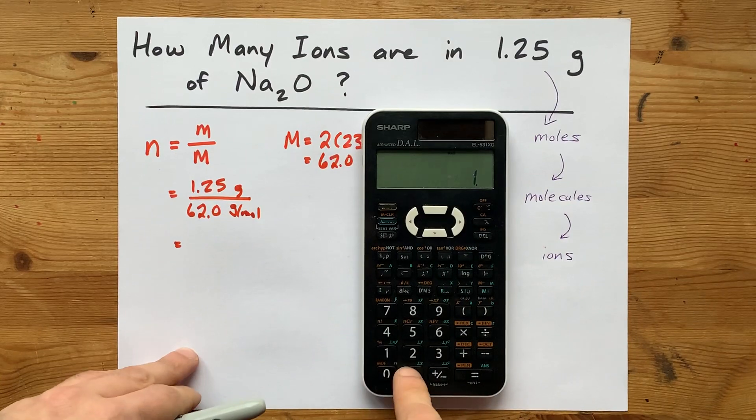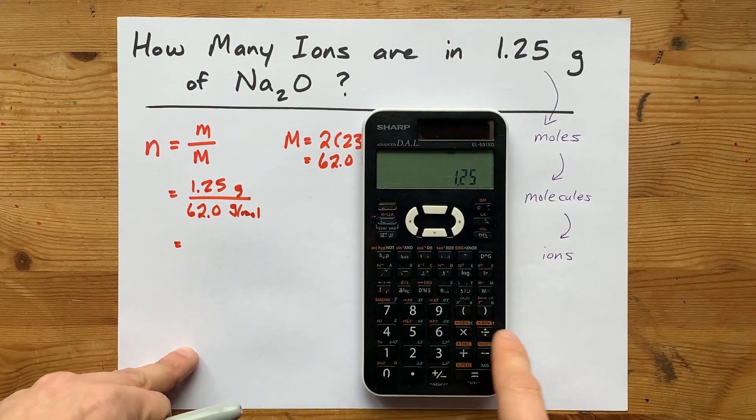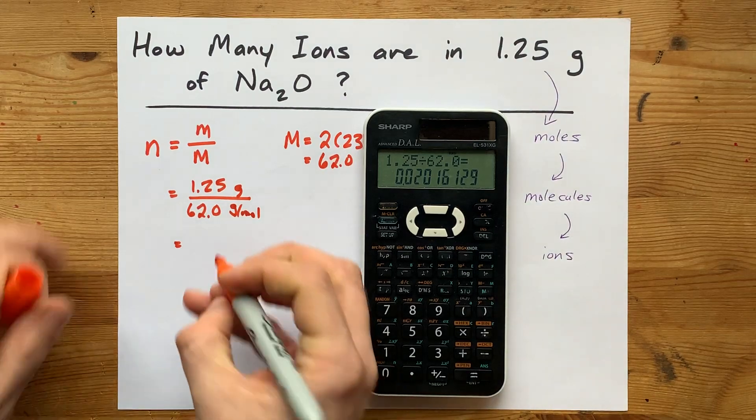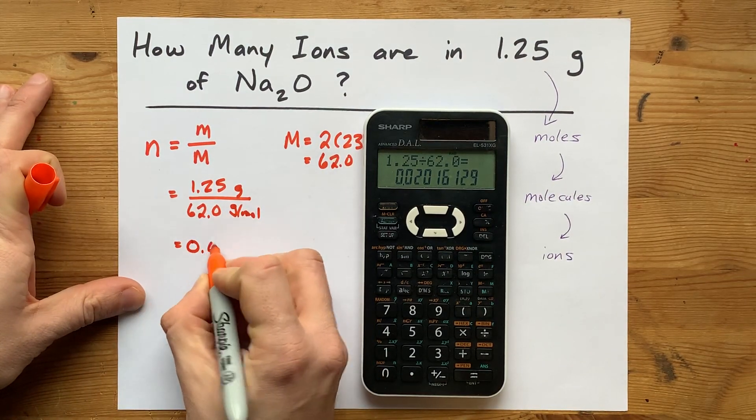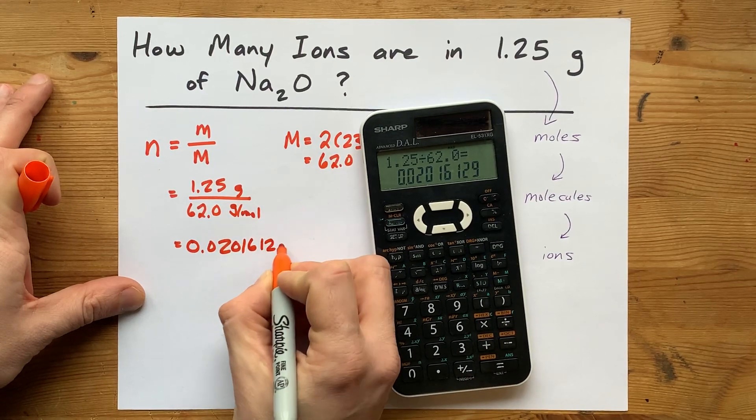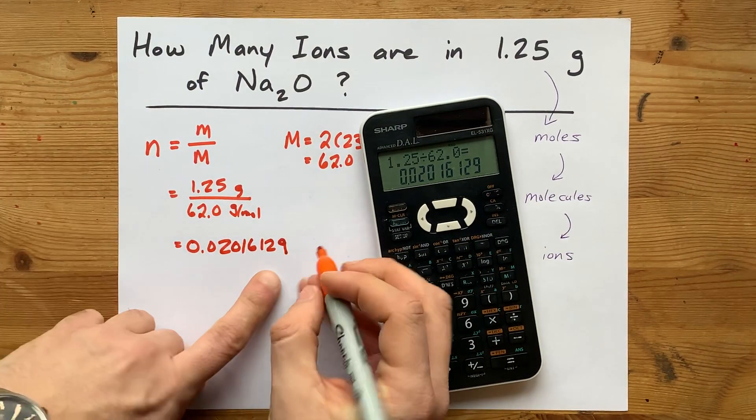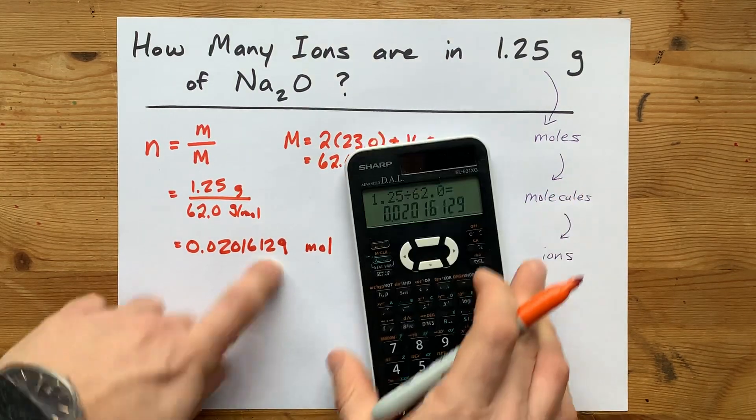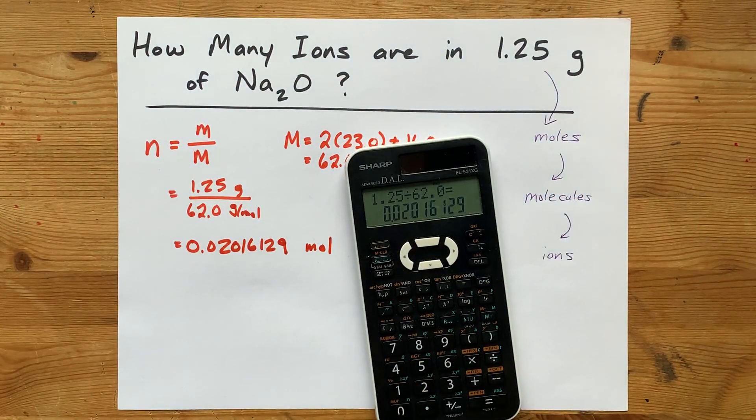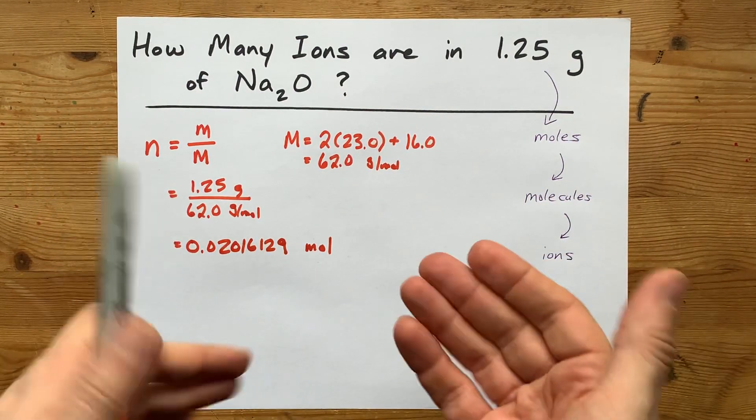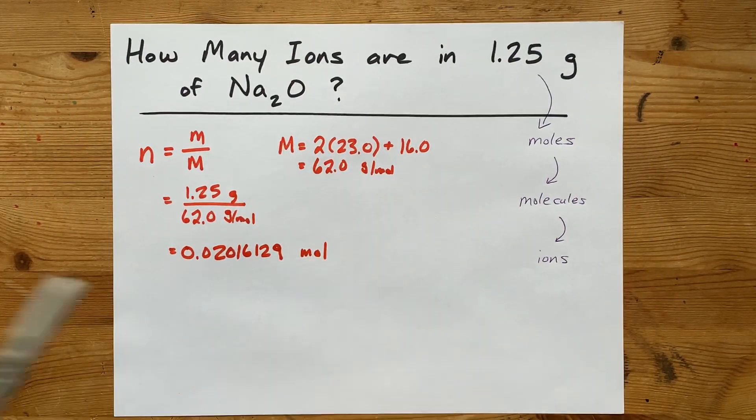And then I'm going to do 1.25 divided by 62. I end up with a bunch of numbers. I'm going to carry a whole bunch forward, and I'm going to round at the very end. This is 0.02016 moles of sodium oxide. But that's not how many particles of sodium oxide there are. That's measured in a unit called moles.